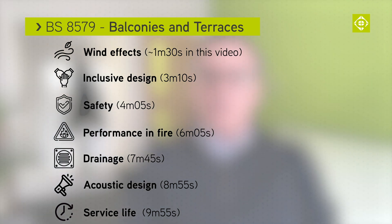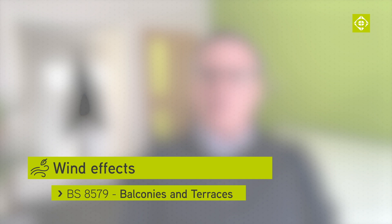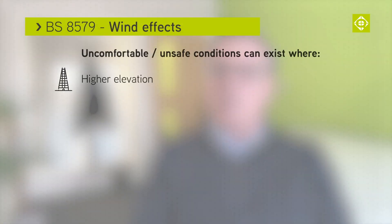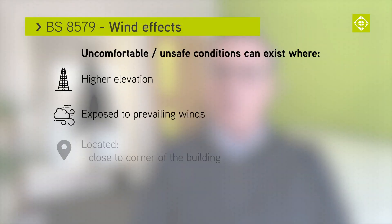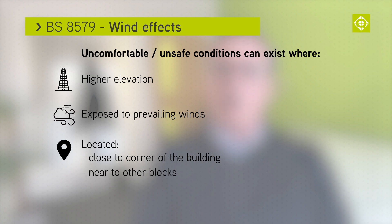Something not really directly considered by the building regulations as far as balcony design is concerned are wind effects, and this can have a significant effect both on balcony users and also objects placed on the balcony. It can cause unsafe conditions but also just be a nuisance and reduce the usability of the balcony. Uncomfortable or unsafe conditions are more likely if the balcony is at a higher elevation, exposed to prevailing winds, located close to the corner of the building, or in close proximity to other blocks. Wind accelerates around corners, so where possible balconies should be located away from corners to avoid these effects.